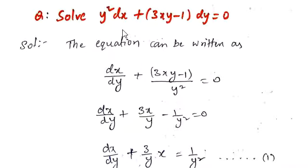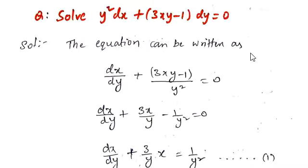Solve y² dx + (3xy - 1) dy = 0. The given equation can be written as dx/dy + (3xy - 1)/y² = 0.